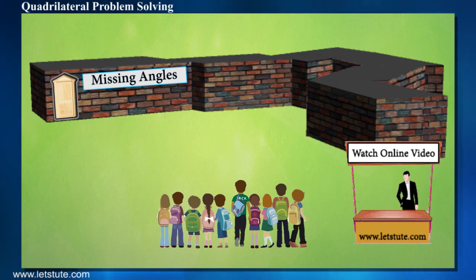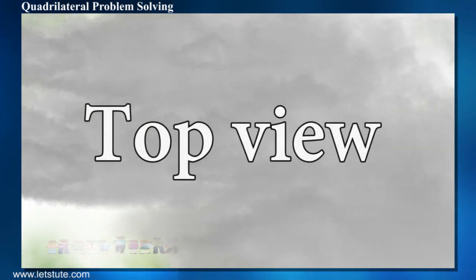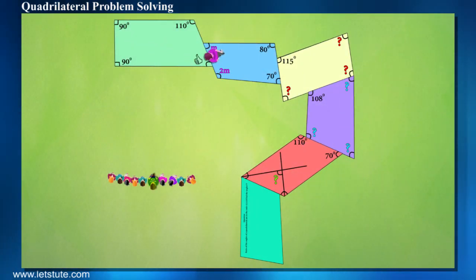The game consists of a tunnel made up of blocks in the shape of different quadrilaterals. He had to cross these blocks by giving right values to the angles, and one wrong answer will rule them out of the game.